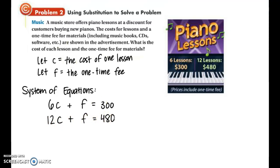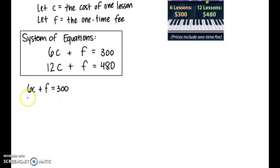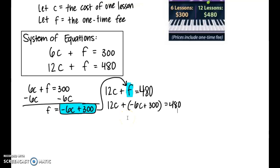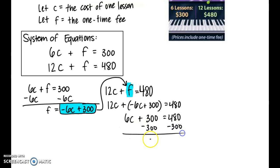Now we want to solve for one of the variables — most likely F, because there's just a coefficient of one. I'm going to work with the first equation. In order to get F by itself, I'm going to subtract 6C to the other side, so we have F equals negative 6C plus 300. Now F is isolated, so we can take that expression and substitute it in for F in the other equation. When substituting, we combine like terms and then solve for C. We find out that C is equal to 30, meaning the cost of one lesson is $30.